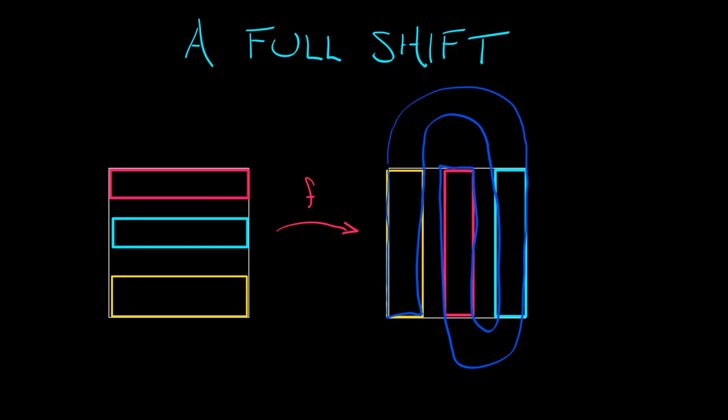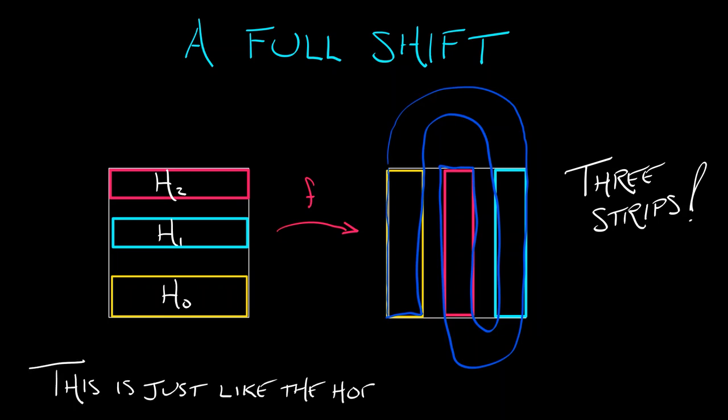But the idea is that I've got three horizontal strips. Let me call them H0, H1, H2, that get stretched out into vertical strips. Now, this is just like the horseshoe, but it's kind of extra.